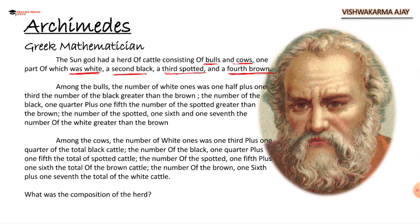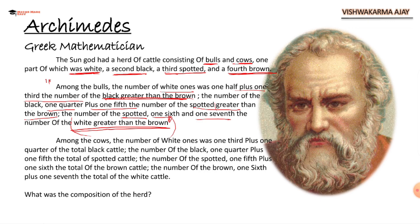There are four subcategories in both categories. Among the bulls, the composition is in the form of a puzzle. The number of white bulls was one half plus one third the number of black greater than brown. The number of black bulls is one quarter plus one fifth the number of spotted greater than brown. And the number of spotted is one sixth plus one seventh the number of white greater than brown.